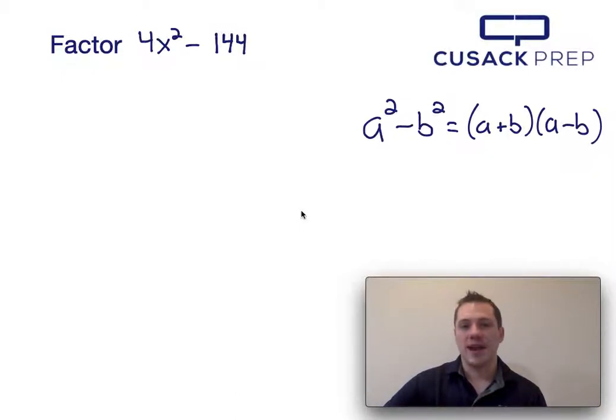Now the first thing I notice when I get to factor this is both 4x squared and 144 are perfect squares. Since I have two perfect squares subtracted from each other, I can factor this using the difference of squares formula.